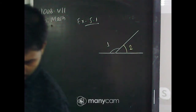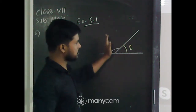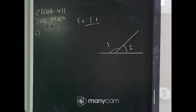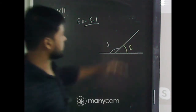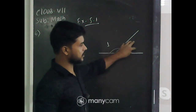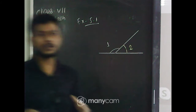Now, if angle 1 decreased, what change should take place in angle 2 such that both the angles still remain supplementary? If you decrease angle 1, what changes take place in angle 2 such that angle 1 and angle 2 are still supplementary angles?